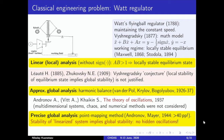Now let us consider a well-known engineering problem that stimulated the development of the classical theories of Lyapunov and Andronov and the theory of hidden oscillations. It is the problem of analysis of stability and oscillation of a flying ball regulator — a classical control system invented by James Watt in 1788 to maintain a constant rotation speed.